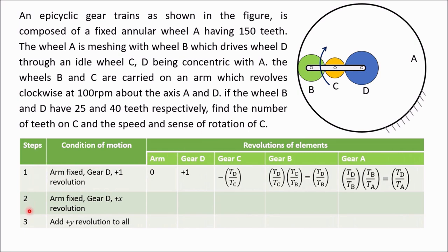To solve this we prepare a table. There are three common steps: one, two, three. The second column is the condition of motion, and the first column is always the arm. So here we first write arm, then we go from one side: gear D, then C, then B, then A. In this problem I have started from gear D, so the columns are: arm, gear D, gear C, gear B, and gear A.